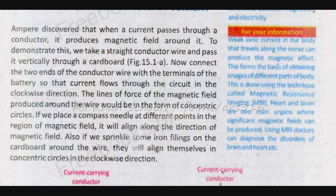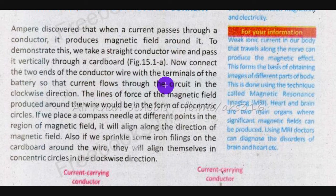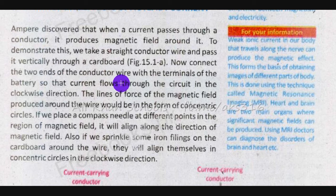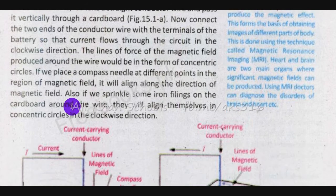Now connect the two ends of the conductor wire to the terminals of the battery so that current flows through the circuit in the clockwise direction. The lines of force of the magnetic field produced around the wire would be in the form of concentric circles.